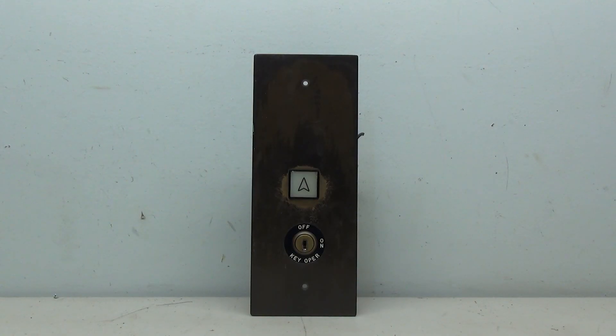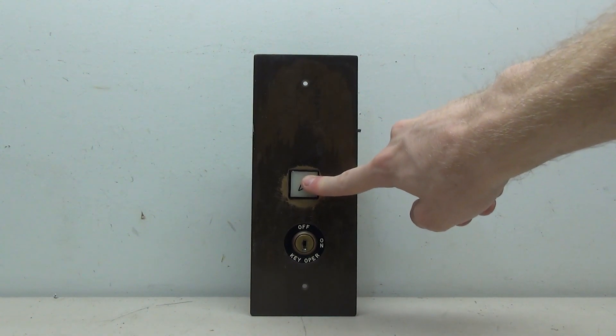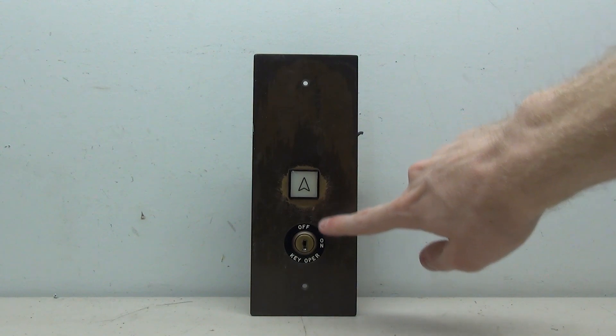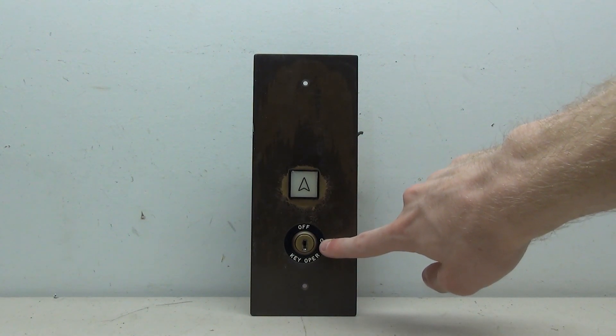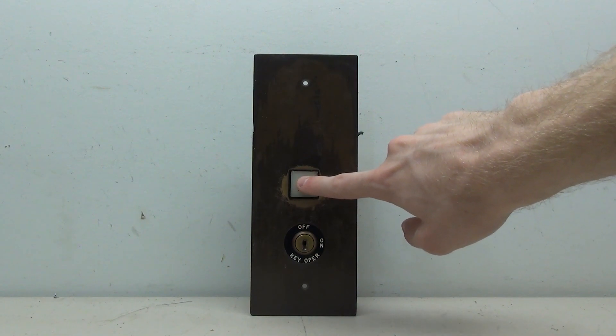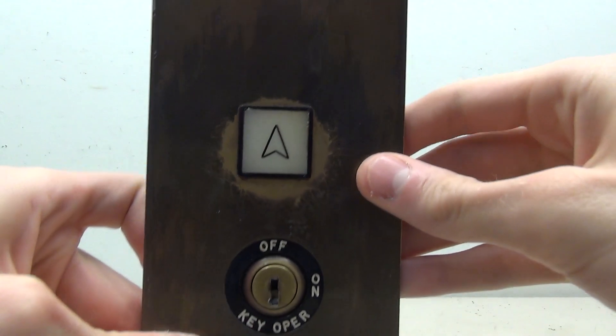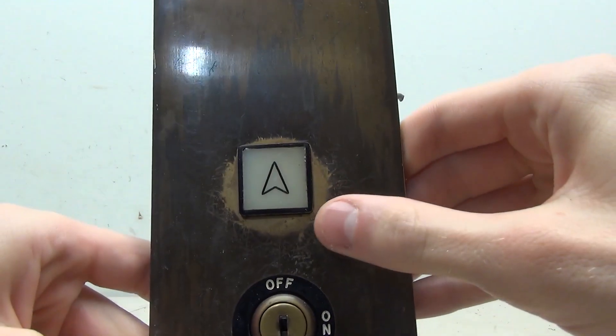In this project I'm going to be showing you the wiring of a Montgomery square button elevator fixture. This particular one is a terminal call button with a singular button and this also has a key operation switch. This will also show how you can make the key turn on the light. I've made videos on these buttons in the past, however if you've never seen these buttons before, they're actually kind of a neat design. They are a square button.